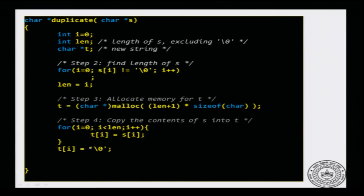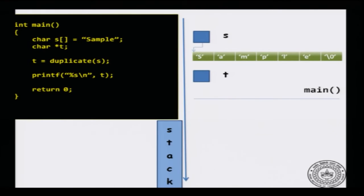I can write: for i equal to 0, i less than len, i++, t[i] = s[i], and then finally t[i] = null to set the last null character. Once I am done copying the array I can just return t, and it will not lead to a dangling pointer because t is allocated on the heap.